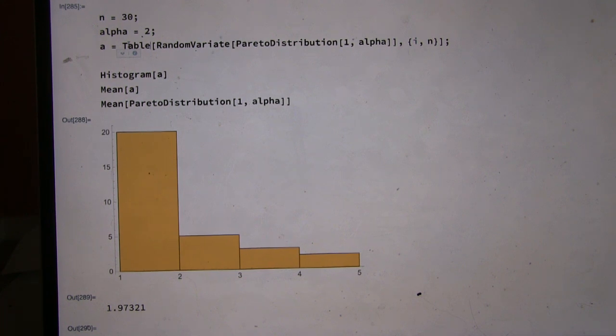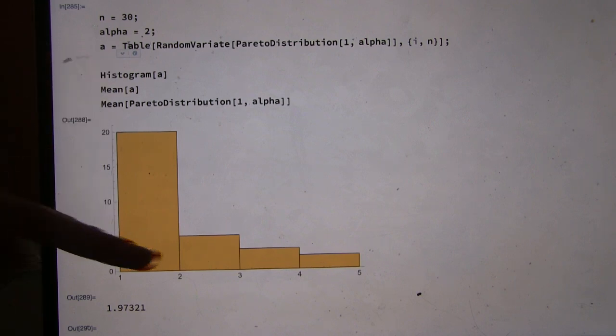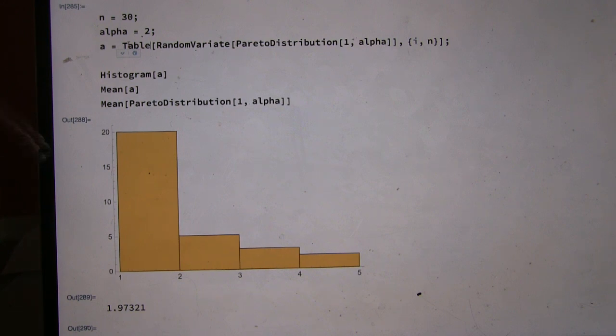Like wealth. Wealth, that's right. And what does it mean that it's fat tailed? It doesn't go to zero very fast. It sort of extends out and doesn't reach zero.